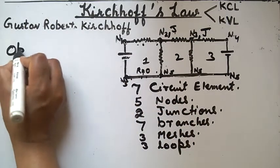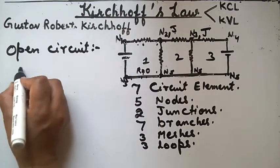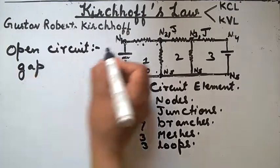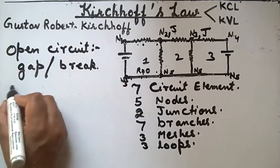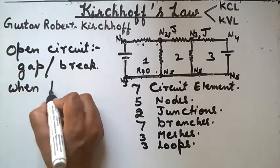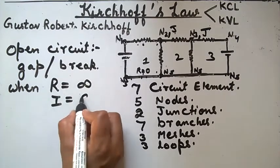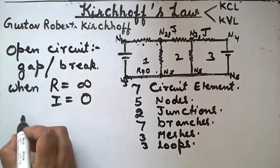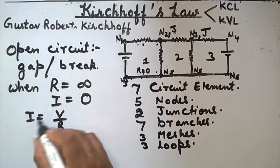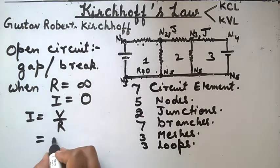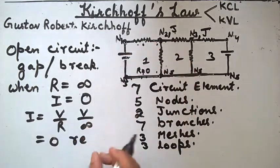What do we mean by open circuit? An open circuit is a gap or break in a circuit. It occurs when resistance is infinite. When resistance is infinite, current is zero. From Ohm's law, I equals V divided by R, and if R is infinity, I is zero, regardless of any voltage across the conductor.